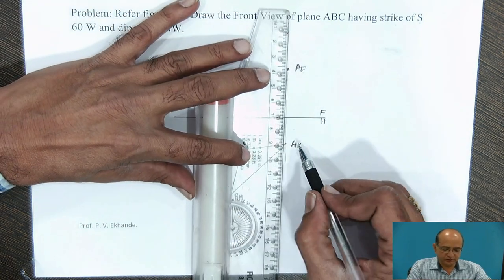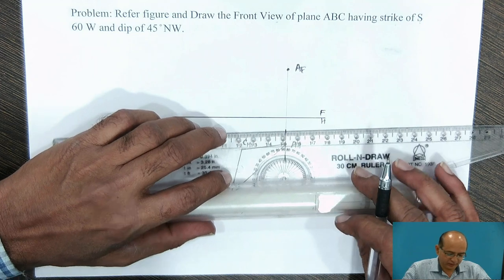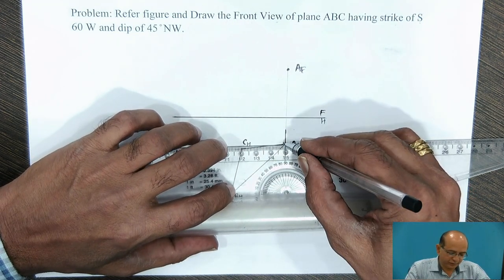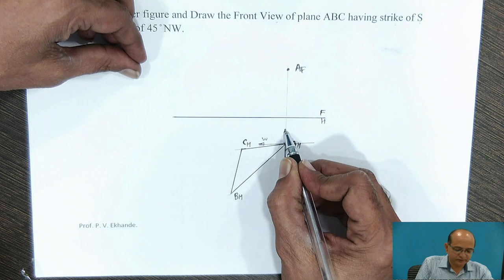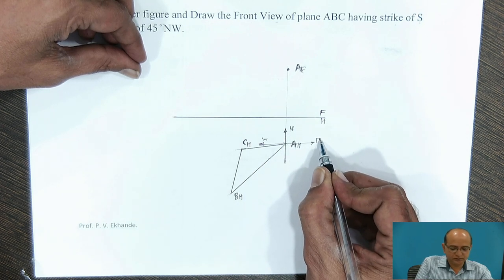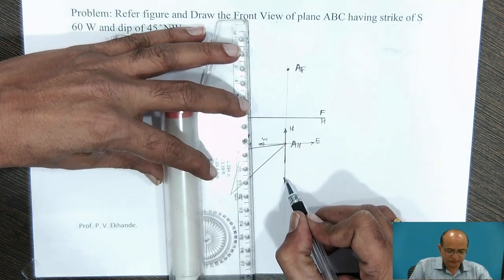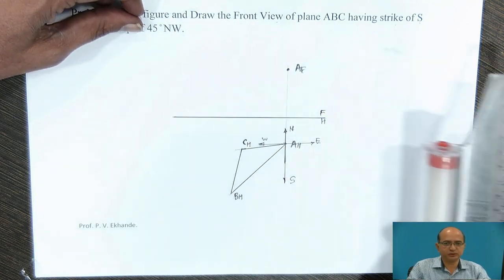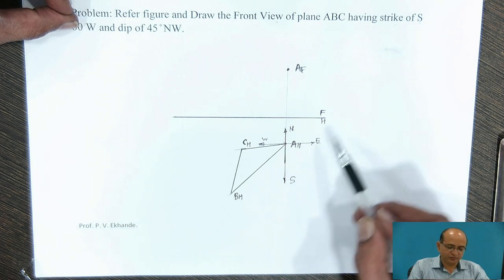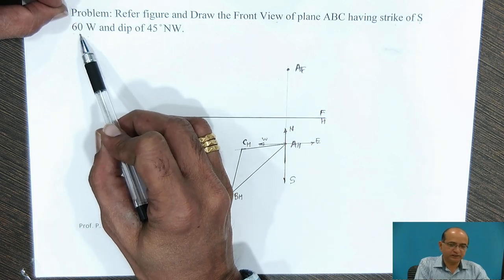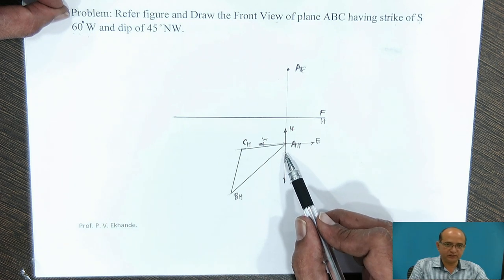For that, we consider the four principal directions: the vertical line is North-South and the horizontal line is West-East. The direction to the left is West, upward is North, right is East, and downward is South. Since the strike is South 60 West, in the third quadrant — from South towards West — the angle is 60 degrees.